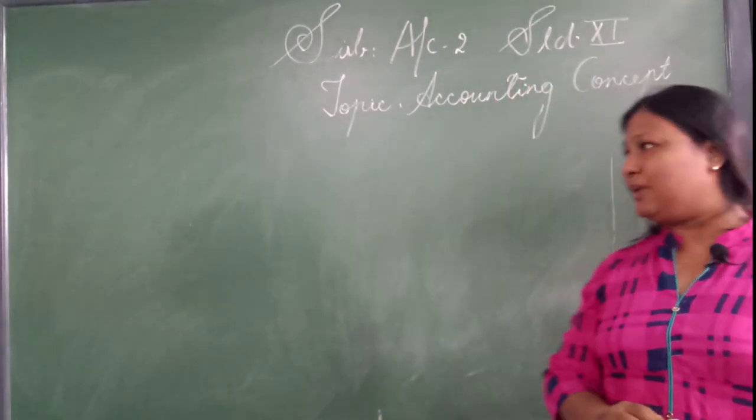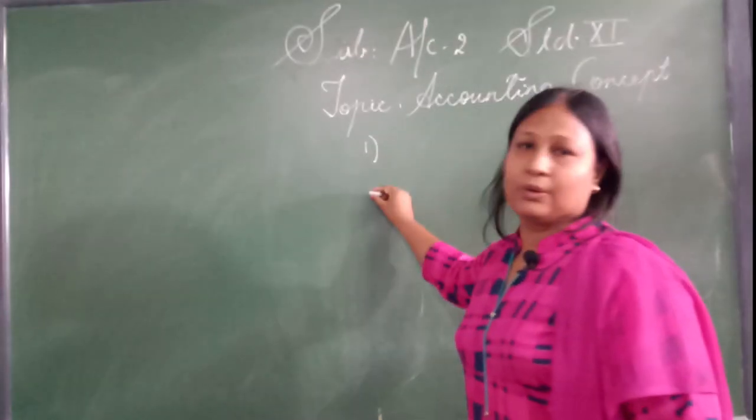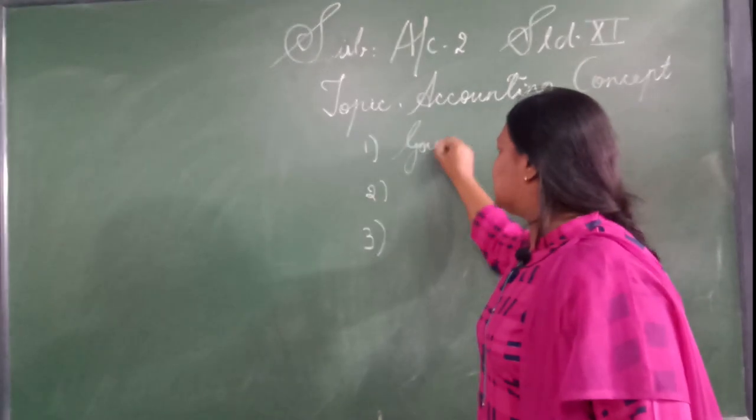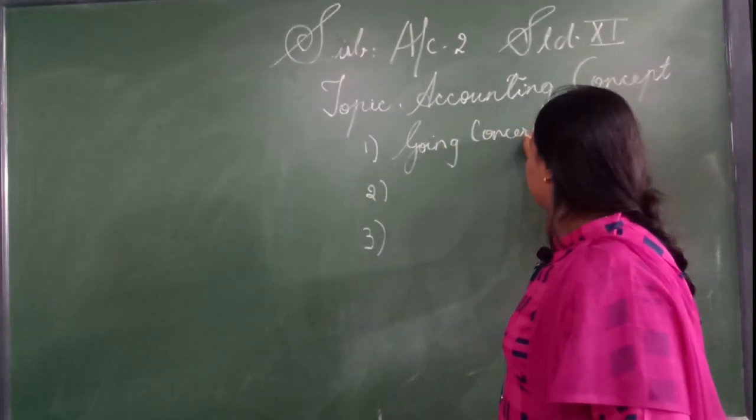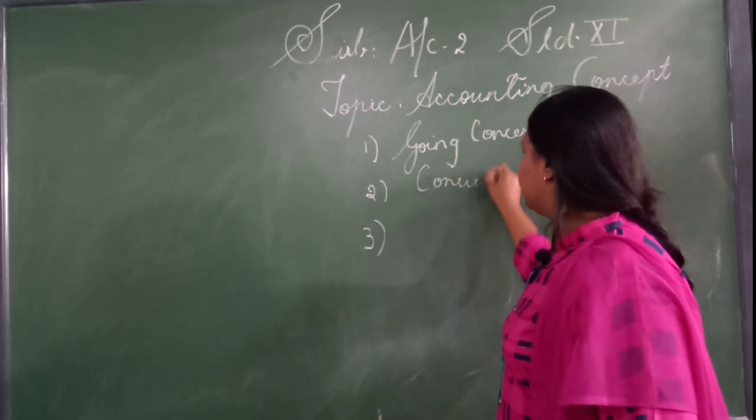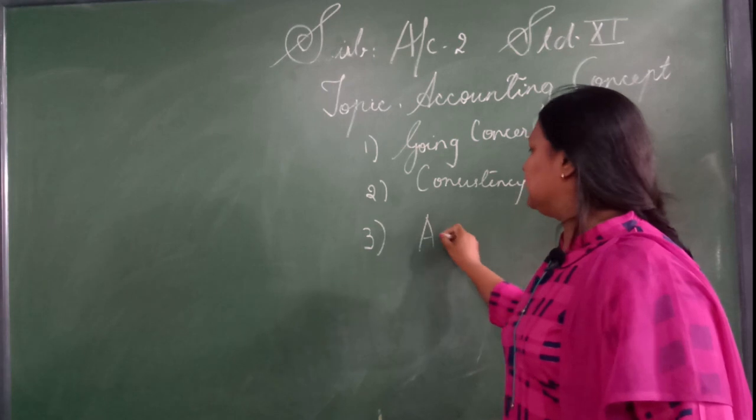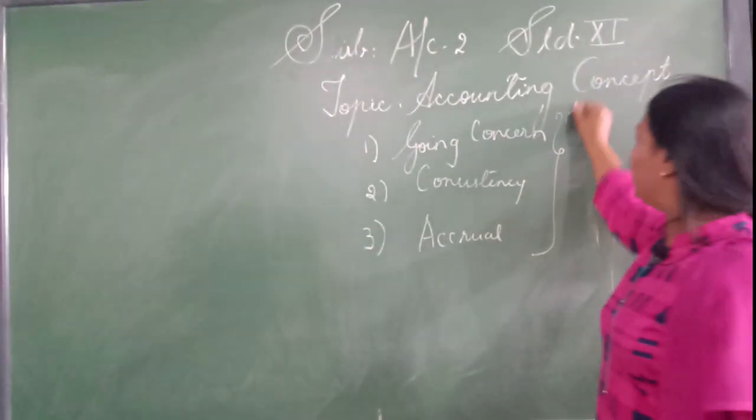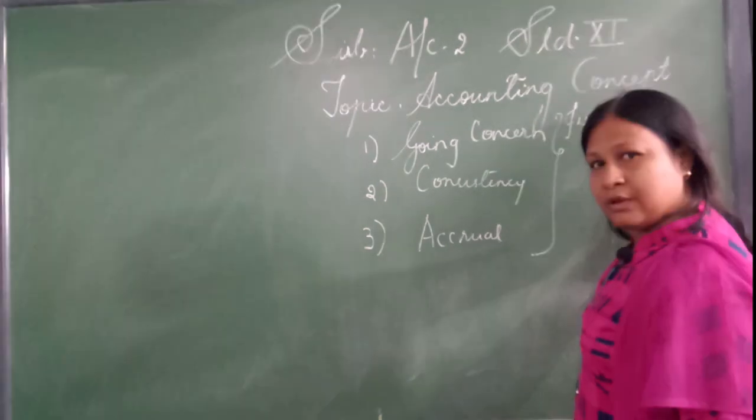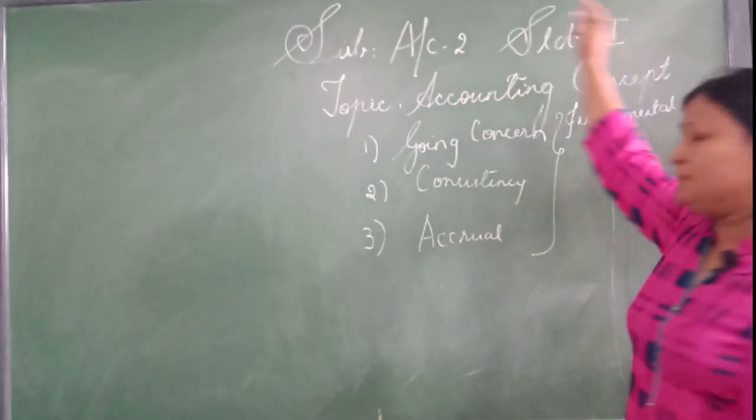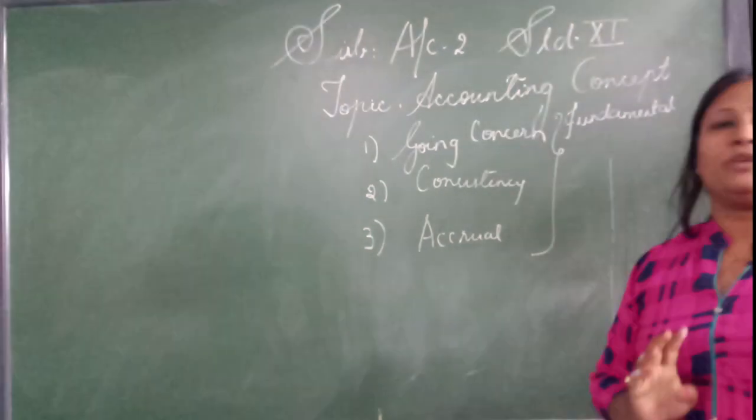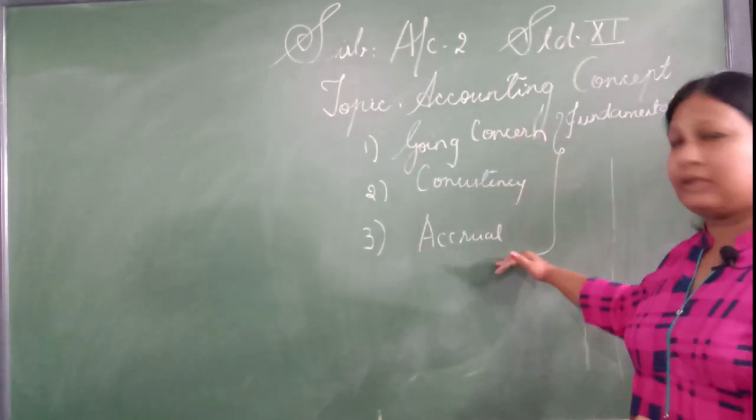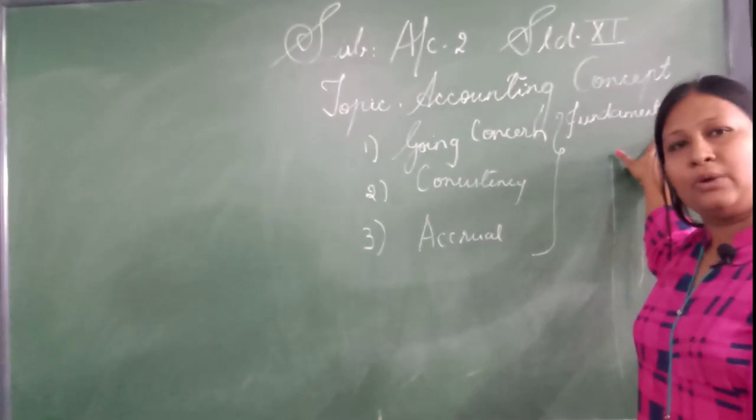In total, out of eleven accounting concepts, today we are going to discuss these three accounting concepts: that is going concern, consistency, and accrual. These three are called fundamental accounting concepts. What do we mean by fundamental accounting concepts? These are the three accounting concepts which came first in the market. All the accounts were written on these three accounting concepts.